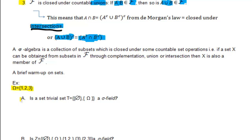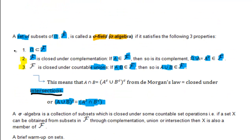The question is, question A: is the trivial set T, defined as two subsets — one being the empty set and the other being omega — a sigma field? Thanks to our definition, we can now check one by one whether this definition holds against our trivial set T.